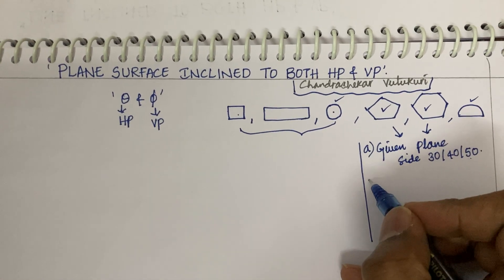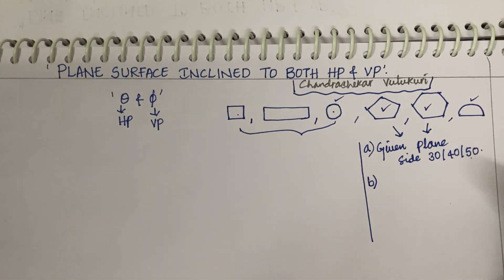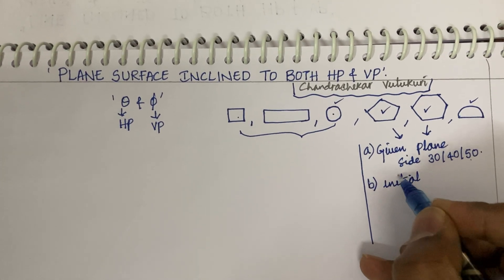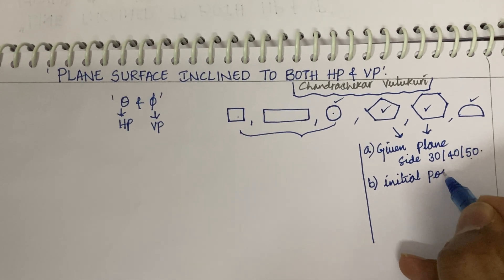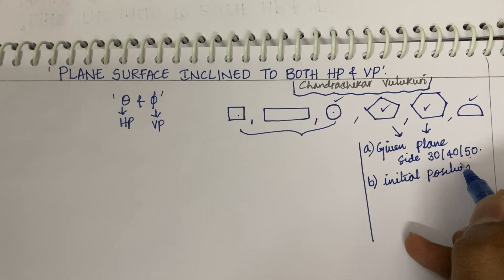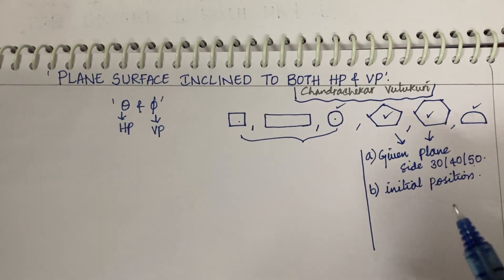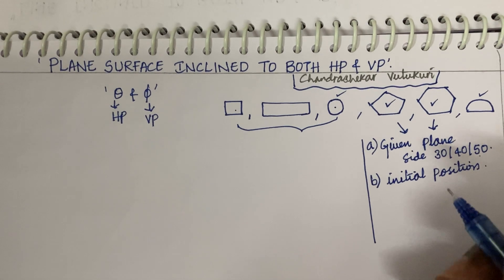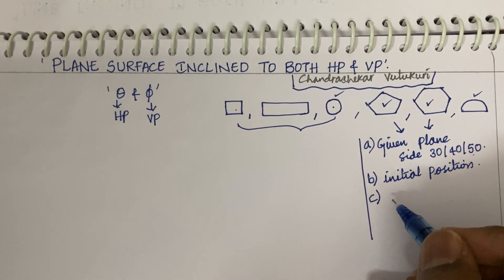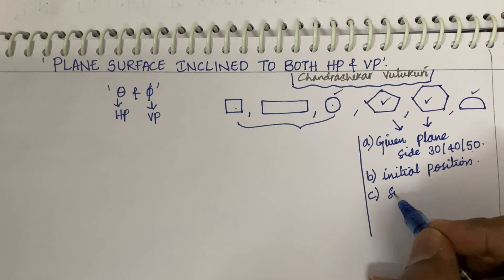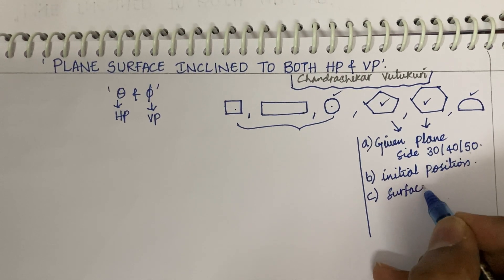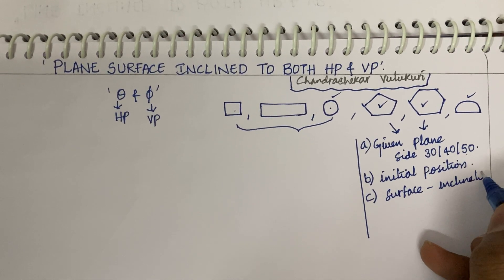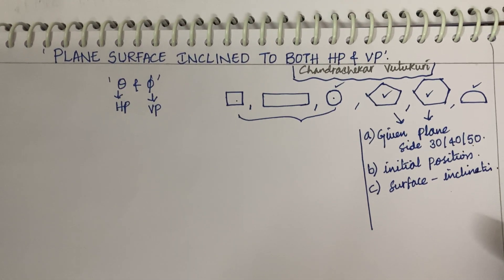These are all in millimeters. The next point to consider is: what is the initial position of the given plane? What is the initial position you are supposed to work out? The initial position is all about surface inclination — whether the surface is inclined to HP or whether the surface is inclined to VP. You need to understand this from the question.